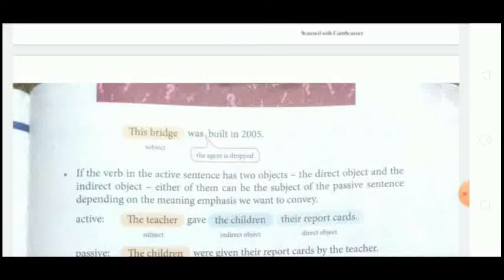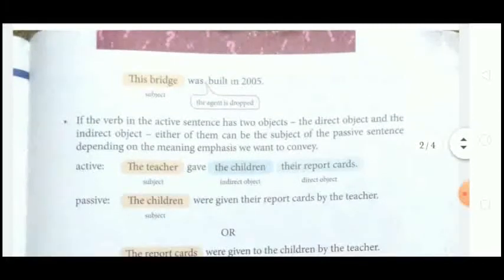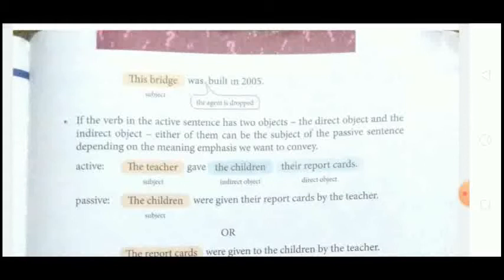Often we remove or drop the agent from passive sentences. Now, if the verb in an active sentence has two objects — a direct object and an indirect object — either of them can become the subject of the passive sentence, depending on the meaning we want to convey. We take whichever object fits the meaning we want to express.